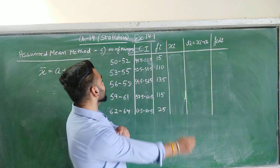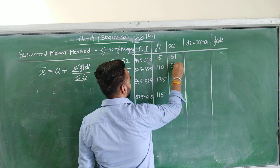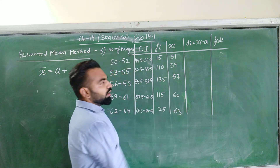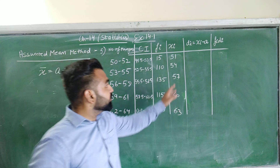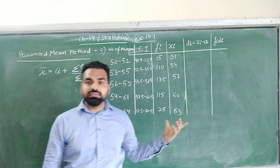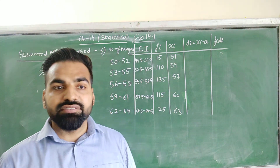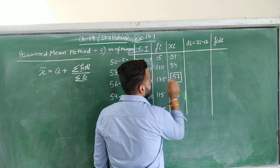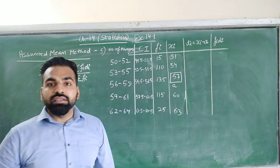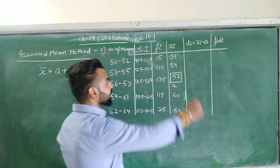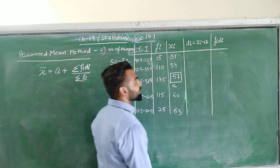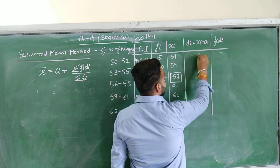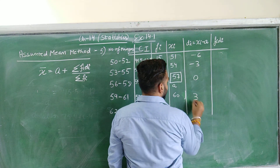Next we find the class marks: 51, 54, 57, 60, and 63. Since there are 5 (an odd number of) class marks, we take the middle (3rd) value, 57, as our assumed mean a. Then we calculate dᵢ = xᵢ − a: 51 − 57 = −6, then −3, 0, 3, and 6.